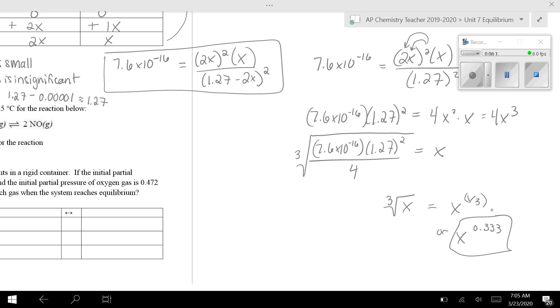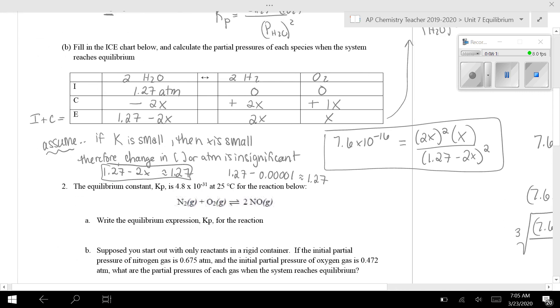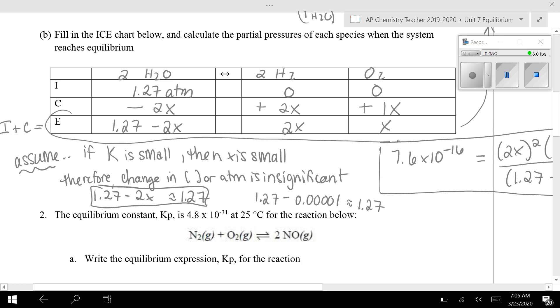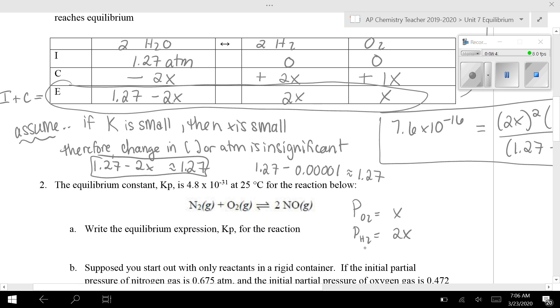So then you go through and you solve for X and go back in and plug X into this setup right here, because what you're trying to find is what's the concentration at equilibrium. So the concentration of oxygen, actually, it's not going to be concentration, it's going to be pressure here. So the pressure of oxygen at equilibrium is going to be equal to X. The pressure of the hydrogen is going to be 2X. So make sure you go back in and plug that in. And when you find the pressure of water equilibrium, it's going to be 1.27 minus 2X.